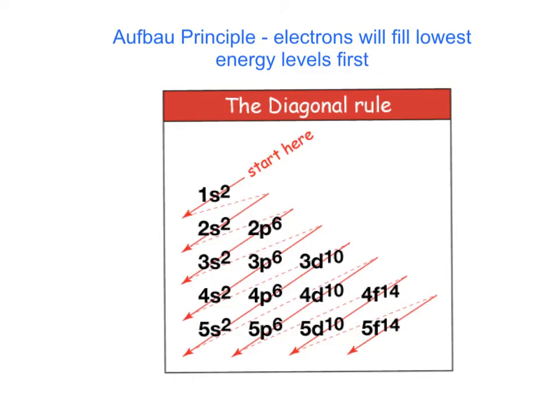You should have out your copy of the diagonal rule as we're going through this. This is the Aufbau principle, which says that the electrons will fill the lowest energy levels first. We would start right here, and we would go through this 1s energy level. The number in front is the major energy level. The letter S, P, D, or F is the sublevel. And then also there are orbitals within there, electrons in the orbitals.